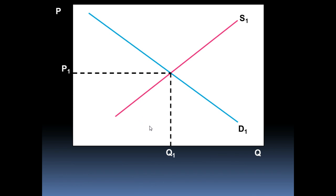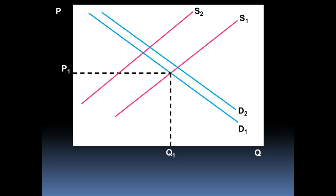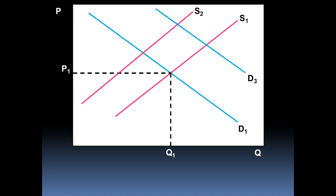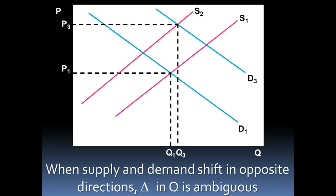Looking at the opposite case — supply moving in one direction and demand in another — we get a different story. Starting at equilibrium P1 and Q1, if supply shifts left and demand shifts right, we reach a new equilibrium where D2 and S2 intersect, showing price increased and quantity decreased. But if instead demand shifts a lot further to D3 intersecting S2, price still increased from the original equilibrium, but now quantity has slightly increased too. When the curves move in opposite directions, we can say for certain what happens to price, but not to quantity.